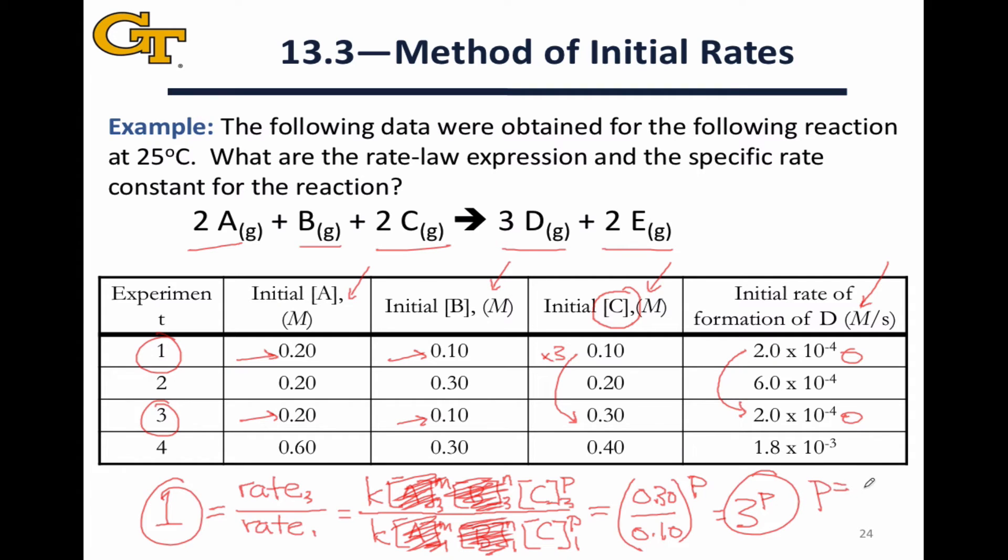That tells us right away that P has to be equal to 0. The only exponent that makes 3 to the something equal to 1 is 0. So what we can say is that this reaction is 0 order in C.